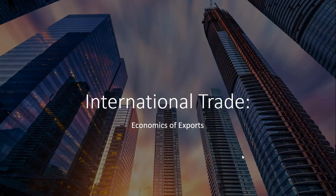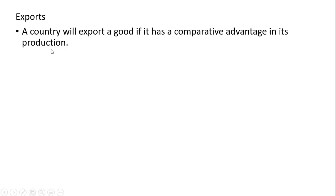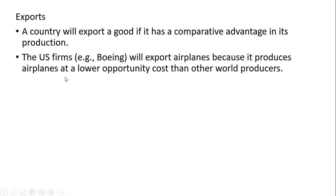In this video we're going to look at the economics of exports. A country will export a good if it has a comparative advantage in its production. US firms — in this case Boeing — will export airplanes because they produce airplanes at a lower opportunity cost than other world producers.